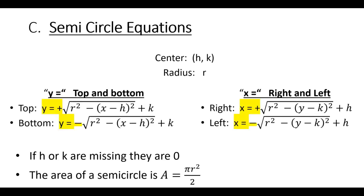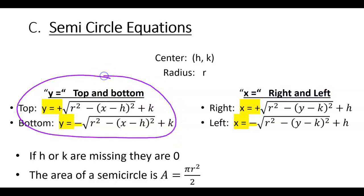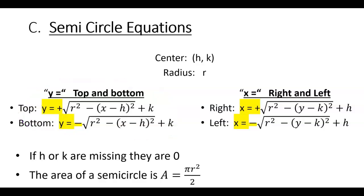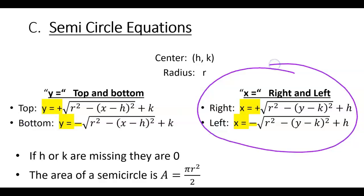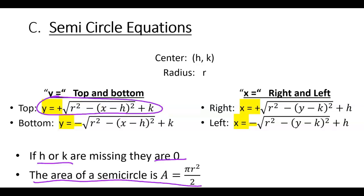Here's a nice summary: you could either have Y by itself or X by itself. If it's Y by itself, the positive means the top half of the circle and the negative represents the bottom half. If you have X by itself, the positive represents the right half and the negative represents the left half. If you're missing either H or K, they are equal to zero. Since we are talking about half circles, if you want to find the area of a half circle, you do pi r squared divided by two.